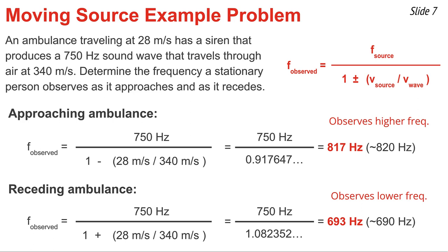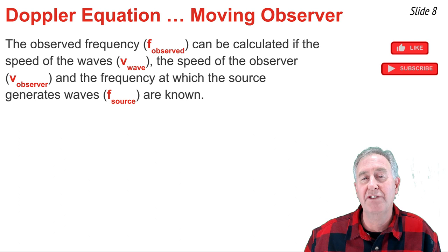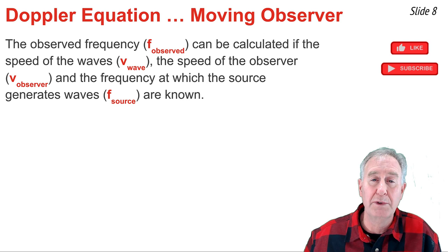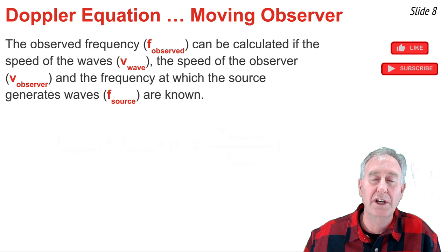The equation we've seen thus far has been for a moving source and a stationary observer. Now we'll look at the case where the observer is moving and the source of waves is stationary. To solve for the frequency observed, we need to know the frequency of the source, the speed at which the observer is moving towards or away from the source, and the speed of waves.